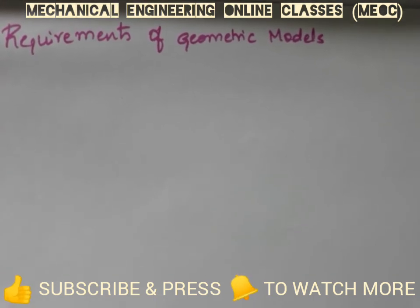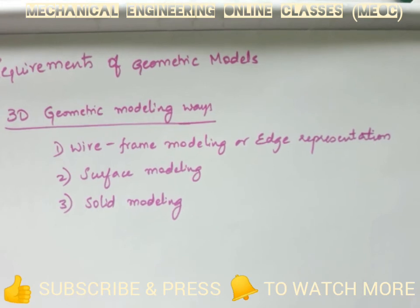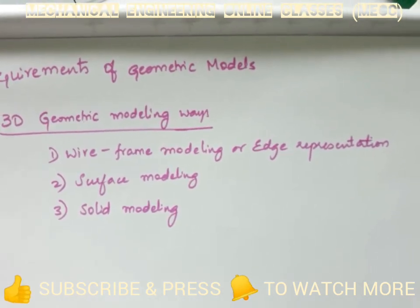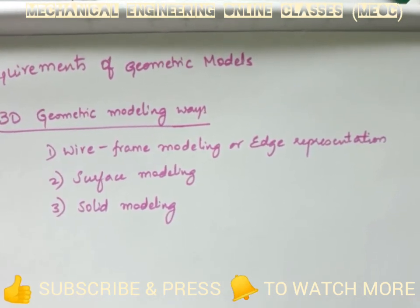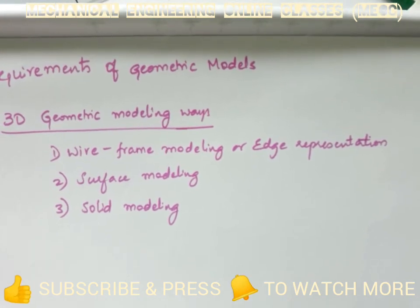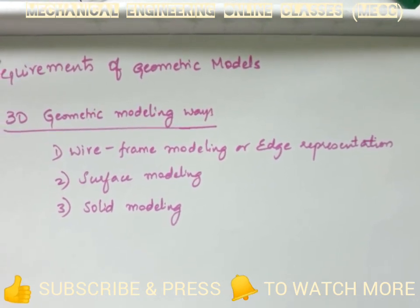There are three ways in which geometric modeling is done: one is wireframe modeling, also called edge representation; the second is surface modeling; and the third is solid modeling.